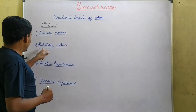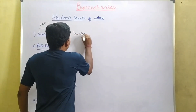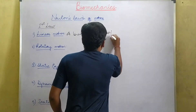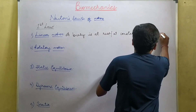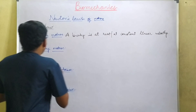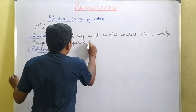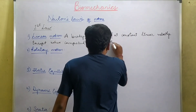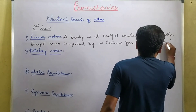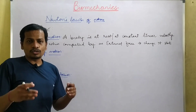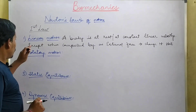The first law is also known as the law of inertia. With respect to linear motion, it is defined as: a body is at rest or at constant linear velocity except when compelled by an external force to change its state. This means an external force is required to start or to stop, to accelerate or decelerate, or alter the direction of the linear motion.